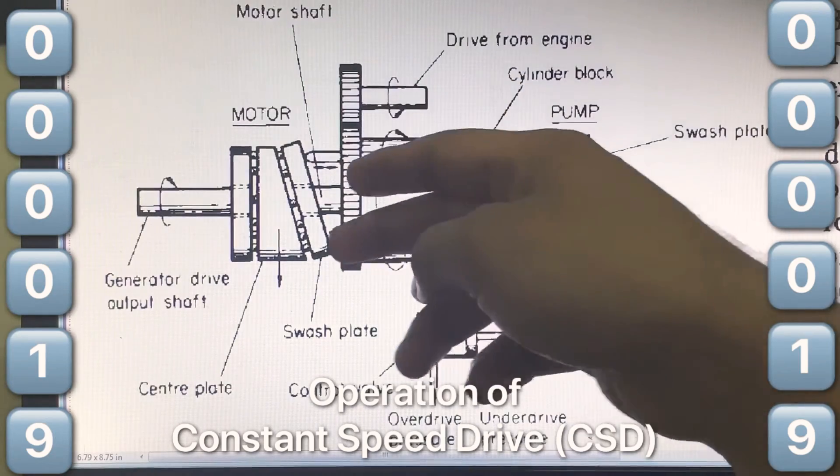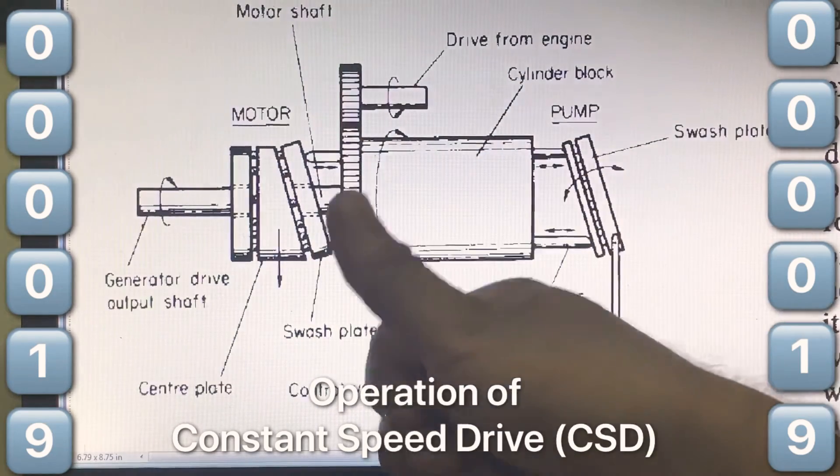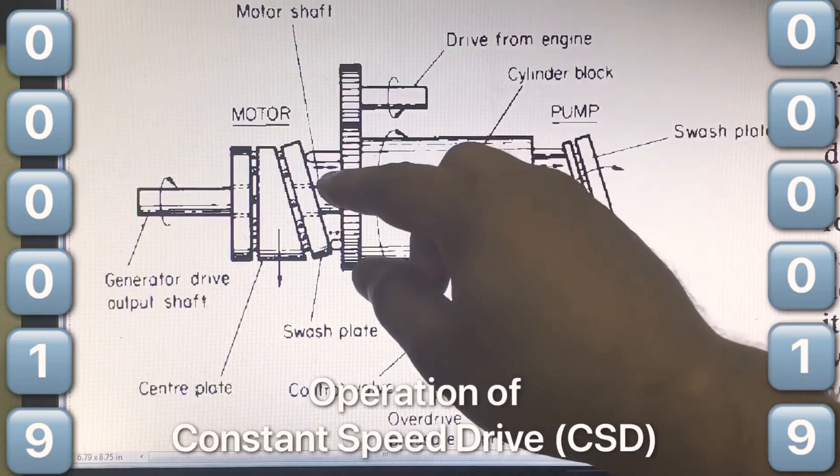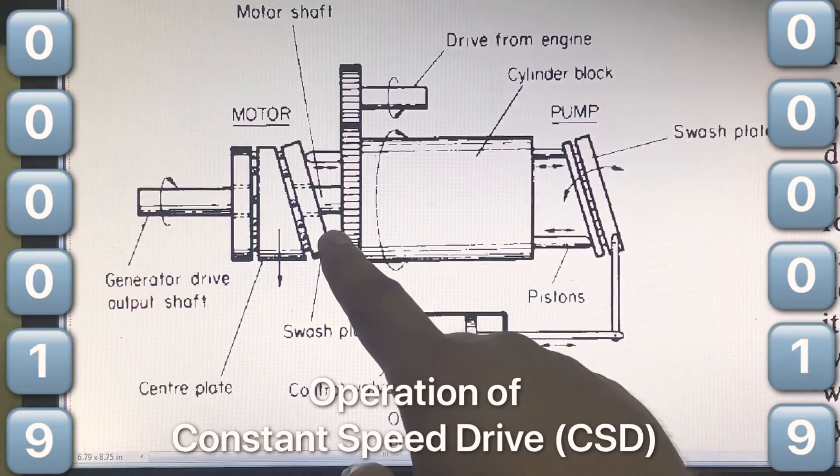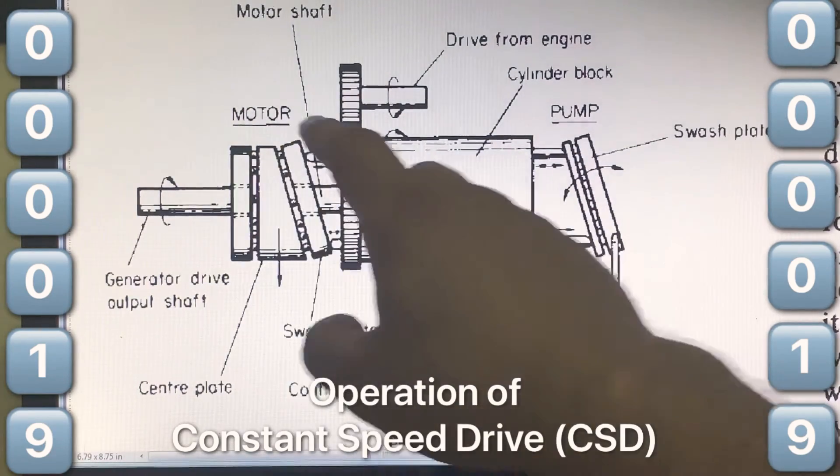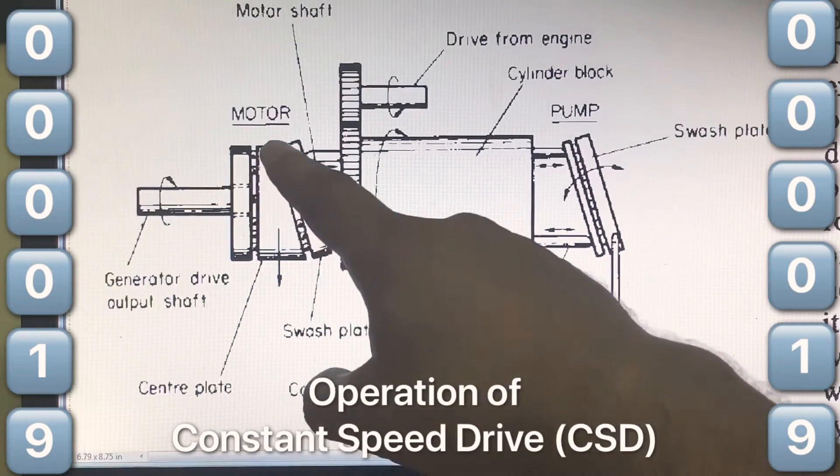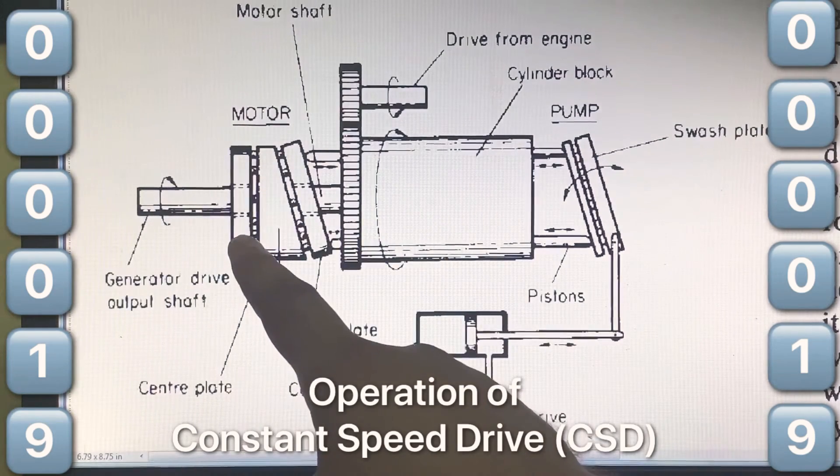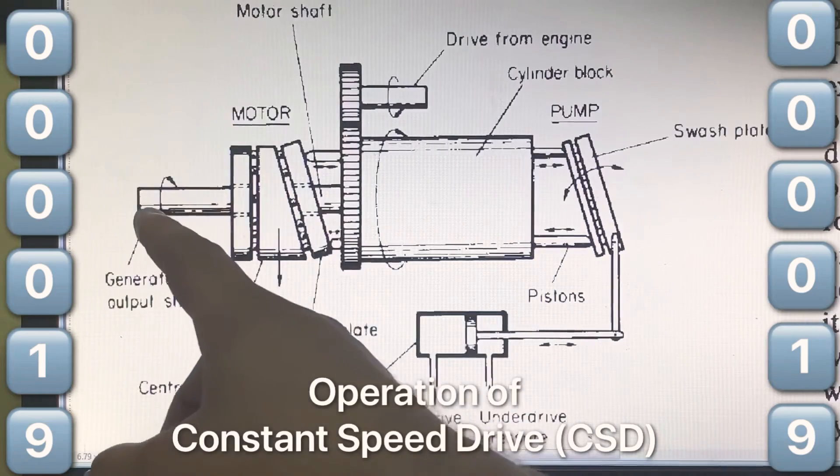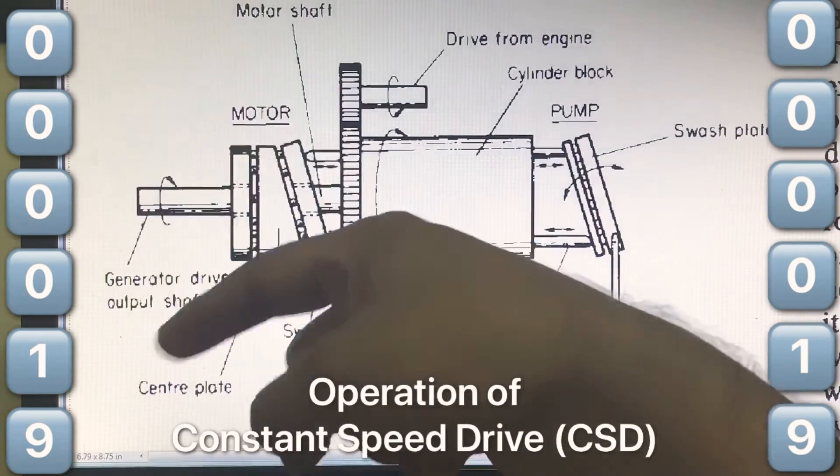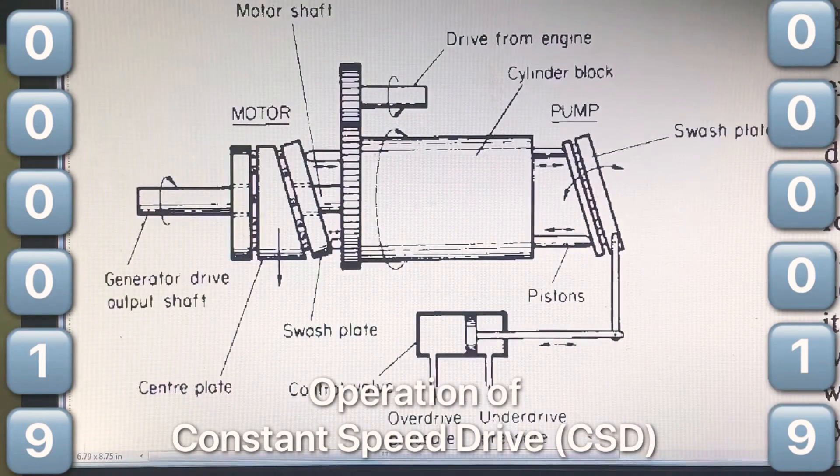So that either a greater or a smaller underdrive pressure is transmitted to the hydraulic motor pistons. Now the motor pistons exert a greater or smaller pressure on the motor swash plate assembly. This assembly is made up of a center plate and an outer plate which is coupled to the outer shaft which is free to rotate with the ball bearings.